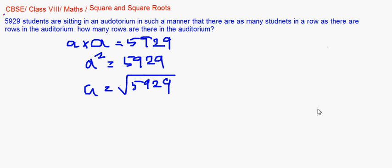So 'a' will be the square root of 5929. That means the number of students and the number of rows in the auditorium is 77.